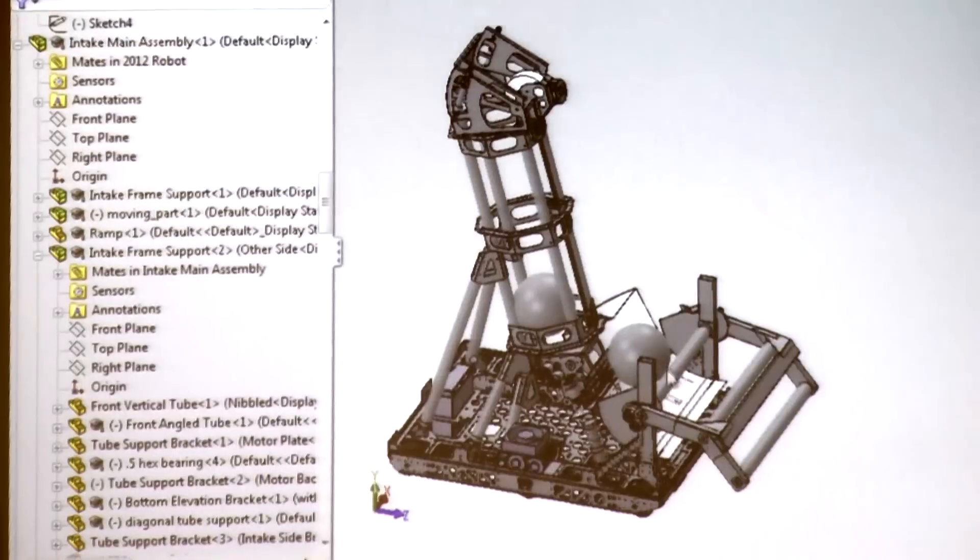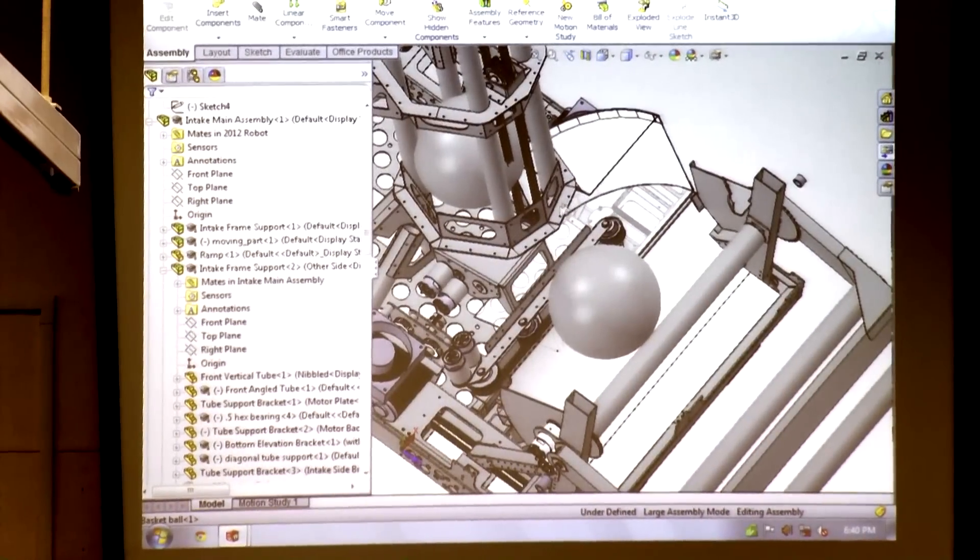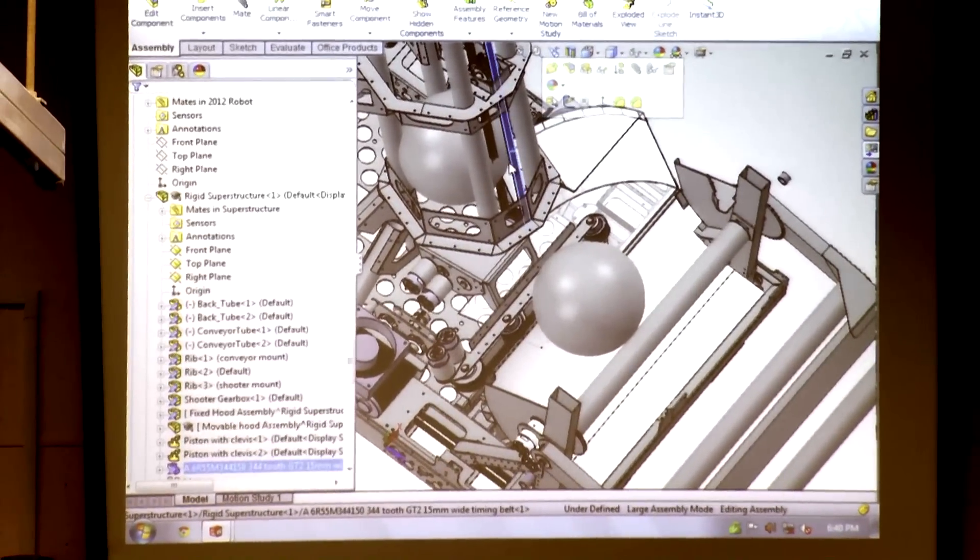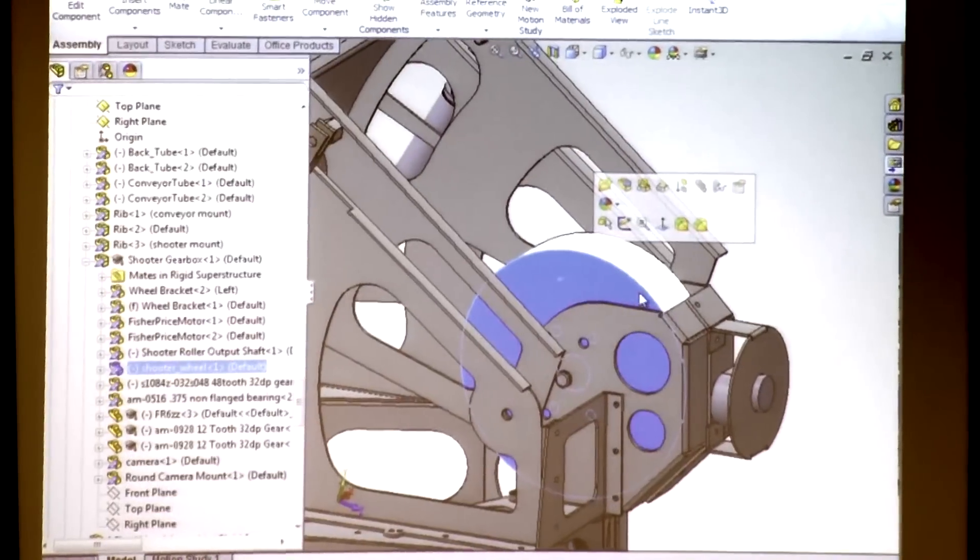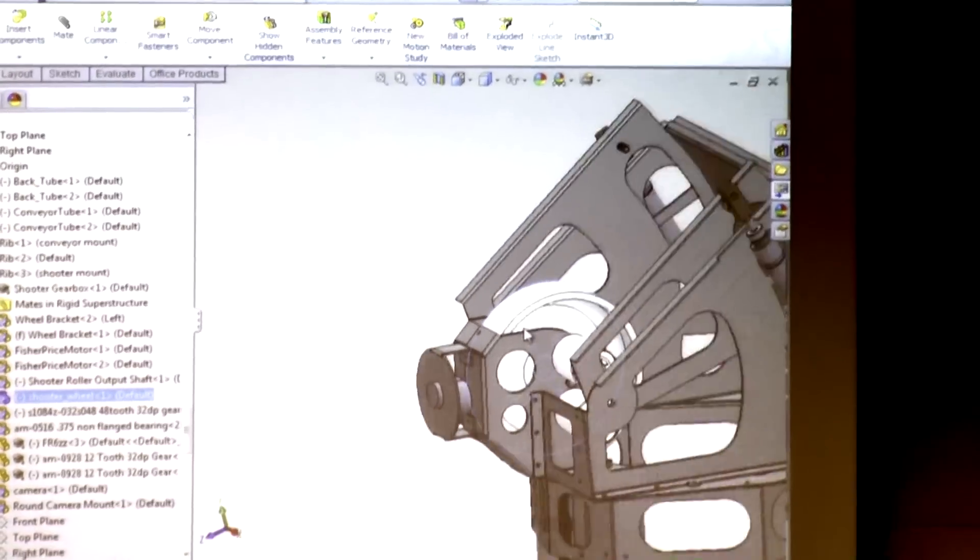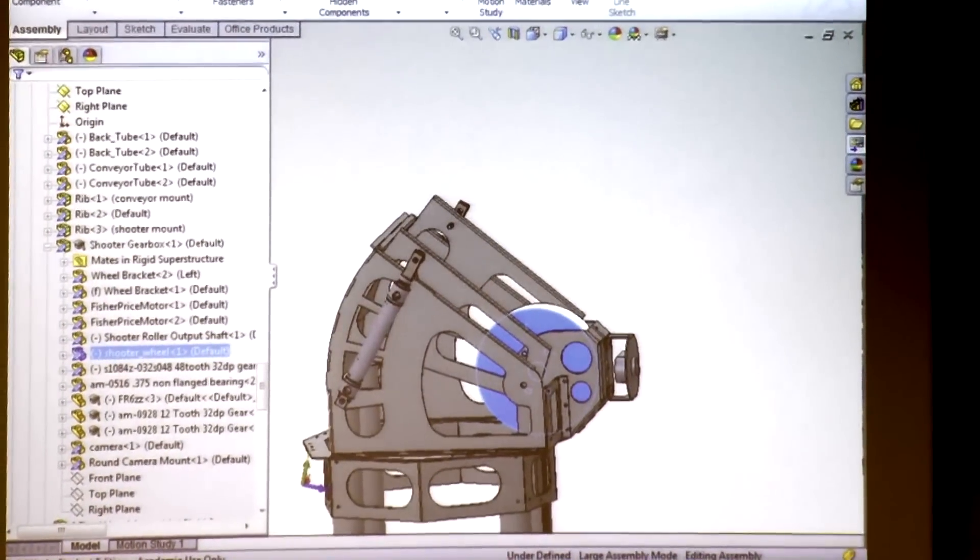So once the balls get into the section right here, it gets stuck around the head, and then gets touched by this conveyor. At the top we have this big flywheel, which once the basketballs touch it, it will be launched out.